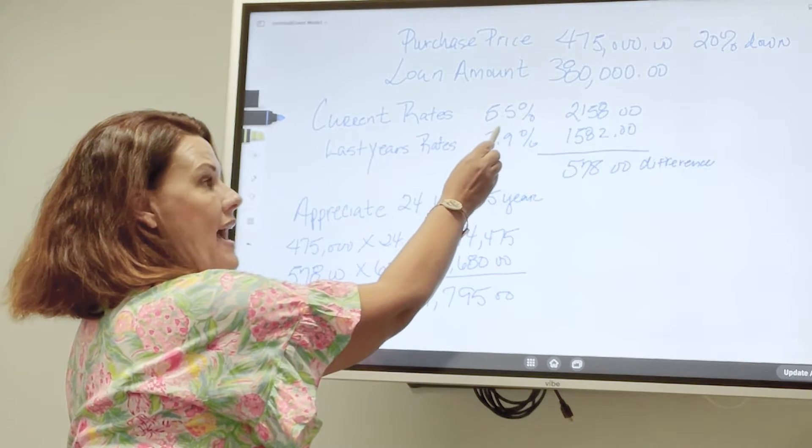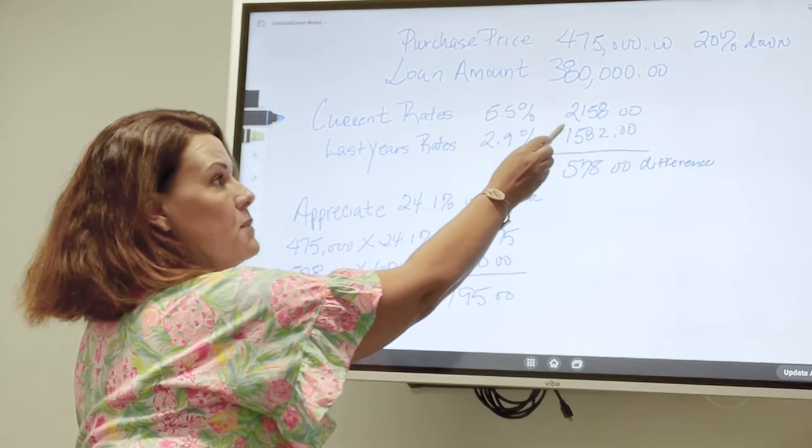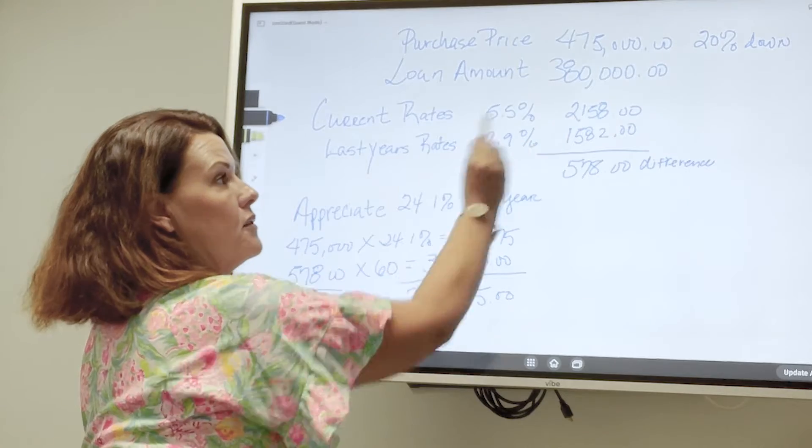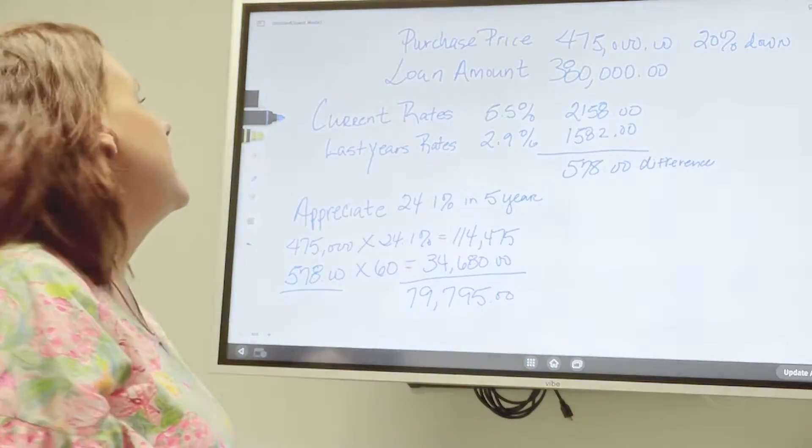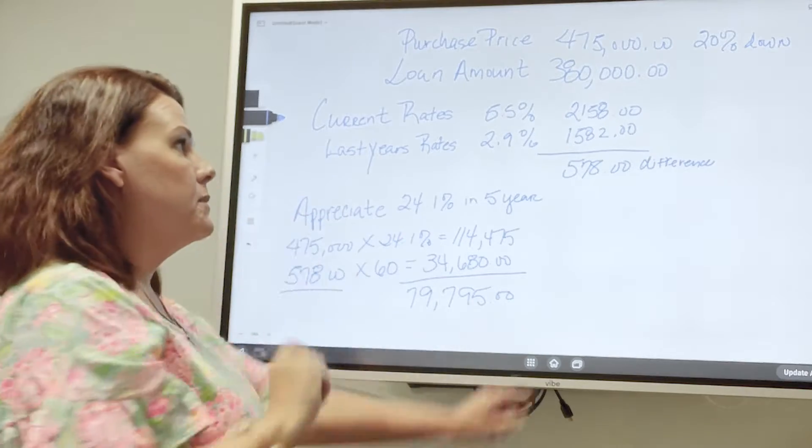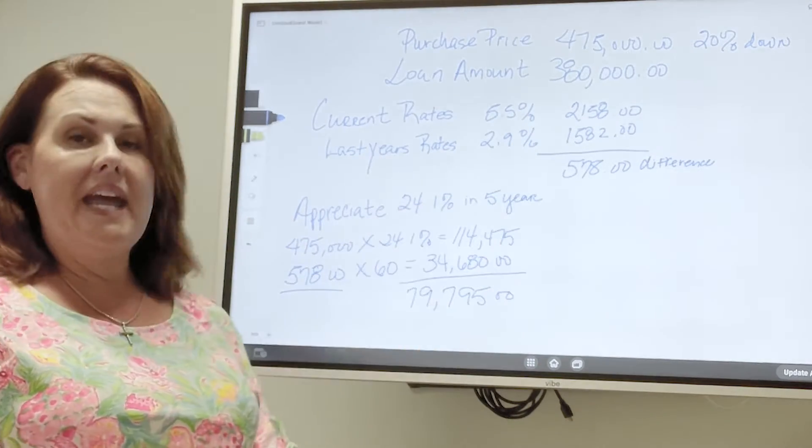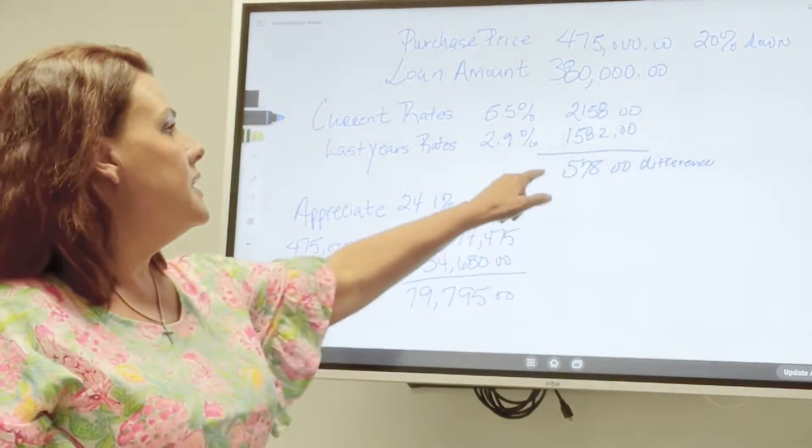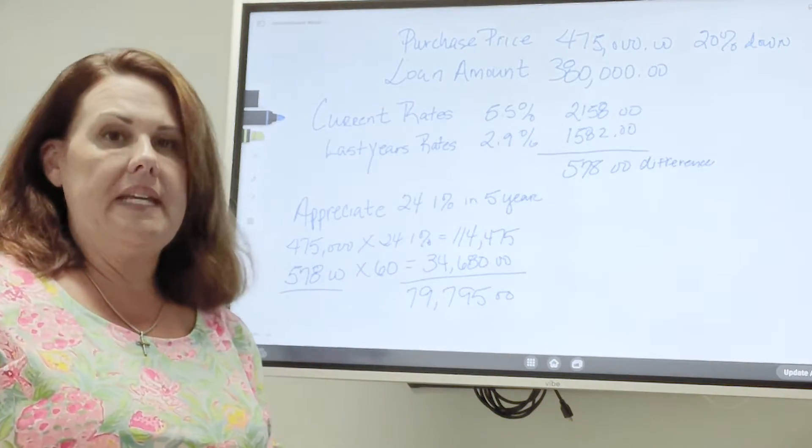Current rates are sitting at 5.5% for a 30 year fixed. That principal and interest is $2,158 as you can see there. Last year interest rates were 2.9% and that would have made the principal and interest $1,582. So the difference in the payment is $578.